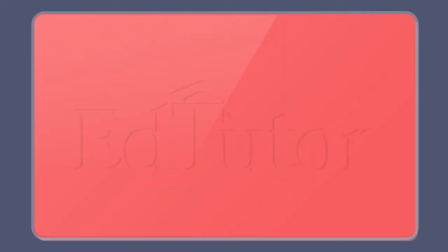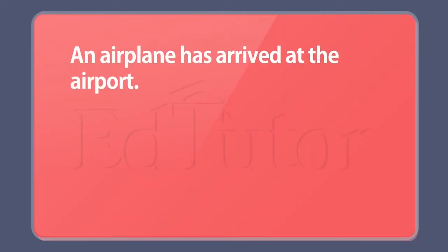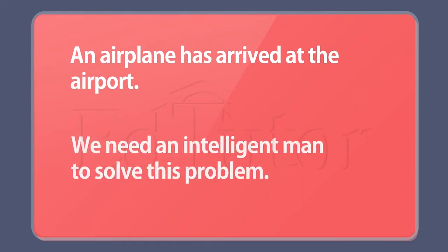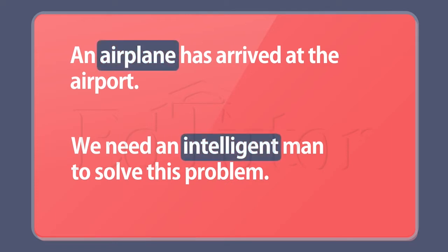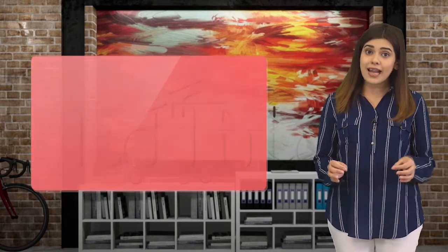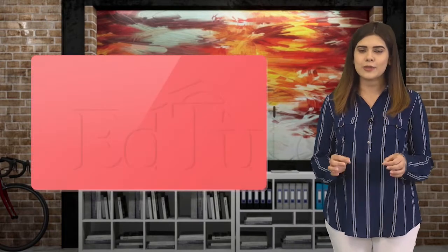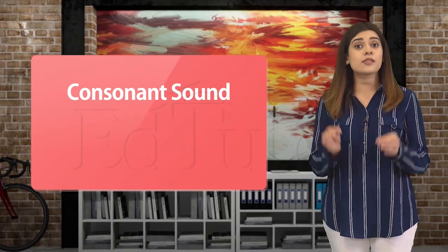For example: 'An airplane has arrived at the airport' and 'We need an intelligent man to solve this problem.' Here, both 'airplane' and 'intelligent' start with the vowel sounds 'a' and 'i', which is why we place the article 'an' before them. If the noun begins with a consonant sound, we use 'a'.